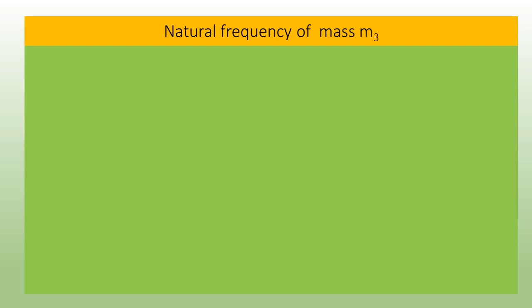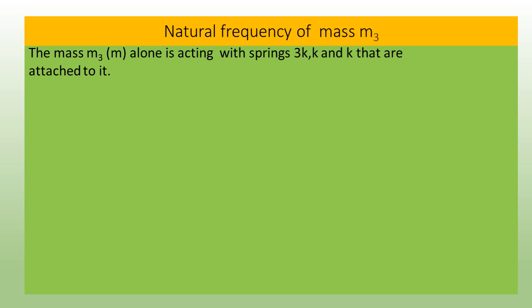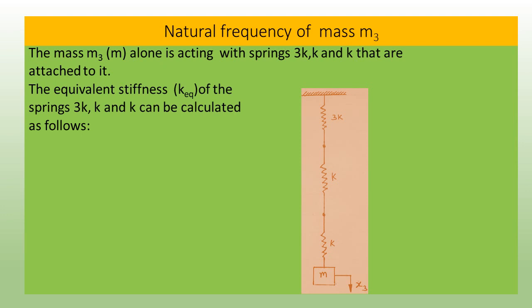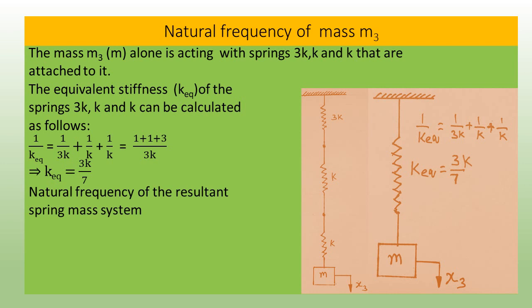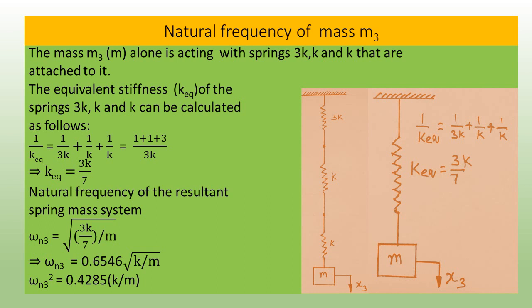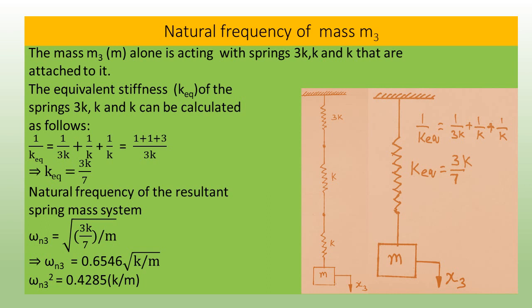For mass m3: mass m acts with springs 3k, k, and k in series. The equivalent stiffness is 1/k_eq = 1/3k + 1/k + 1/k, giving k_eq = 3k/7. The natural frequency is ωn3 = √(k_eq/m), simplifying to ωn3 = 0.6546√(k/m), giving ωn3² = 0.4285 k/m.